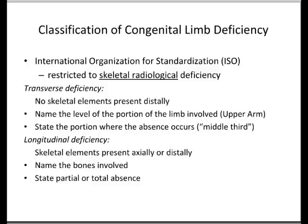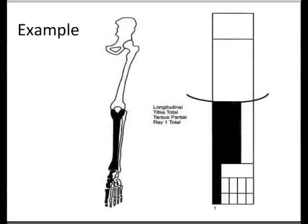A transverse deficiency means there are no skeletal elements present distal to a given level. You name the portion of the limb, such as the upper arm, and then state the portion where the absence occurs, such as the middle third. In a longitudinal deficiency, skeletal elements are present axially or distally, so you name the bones involved and state partial or total absence. For example, a longitudinal deficiency of the tibia — total — with partial absence of the tarsus and total absence of the first ray.